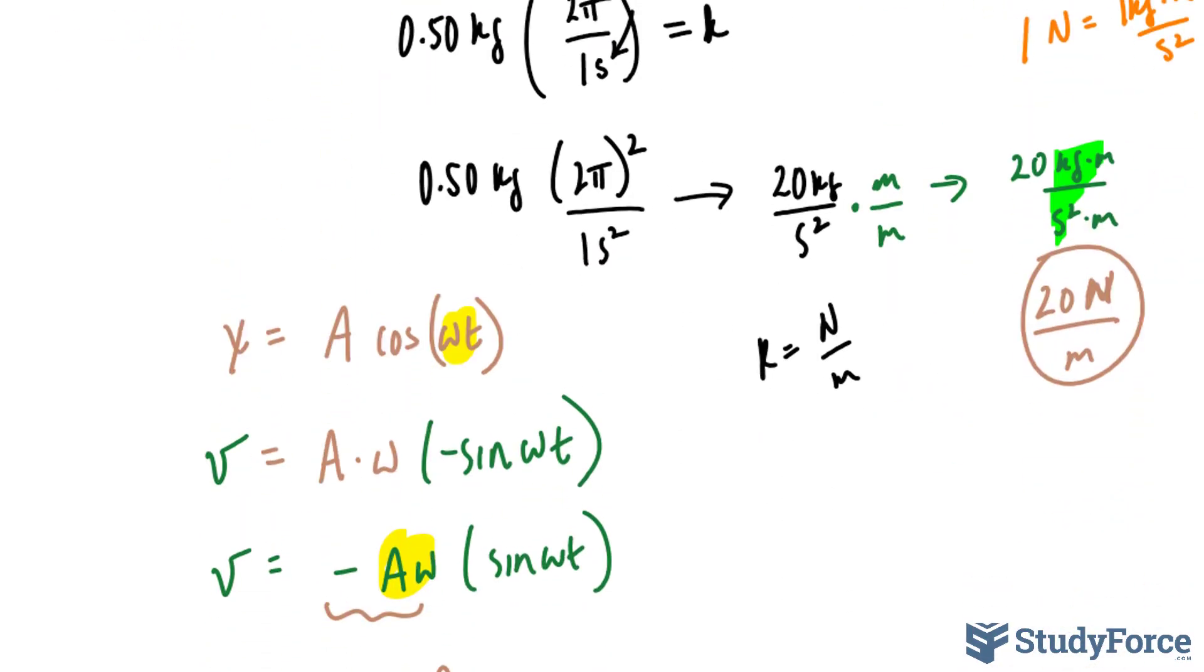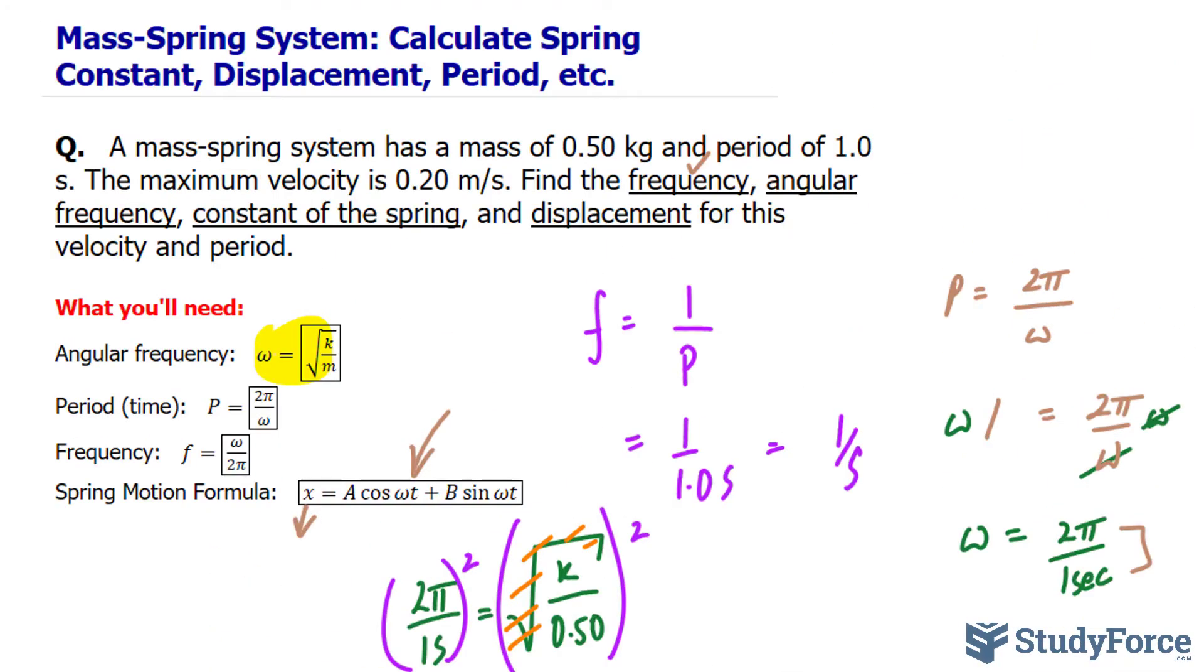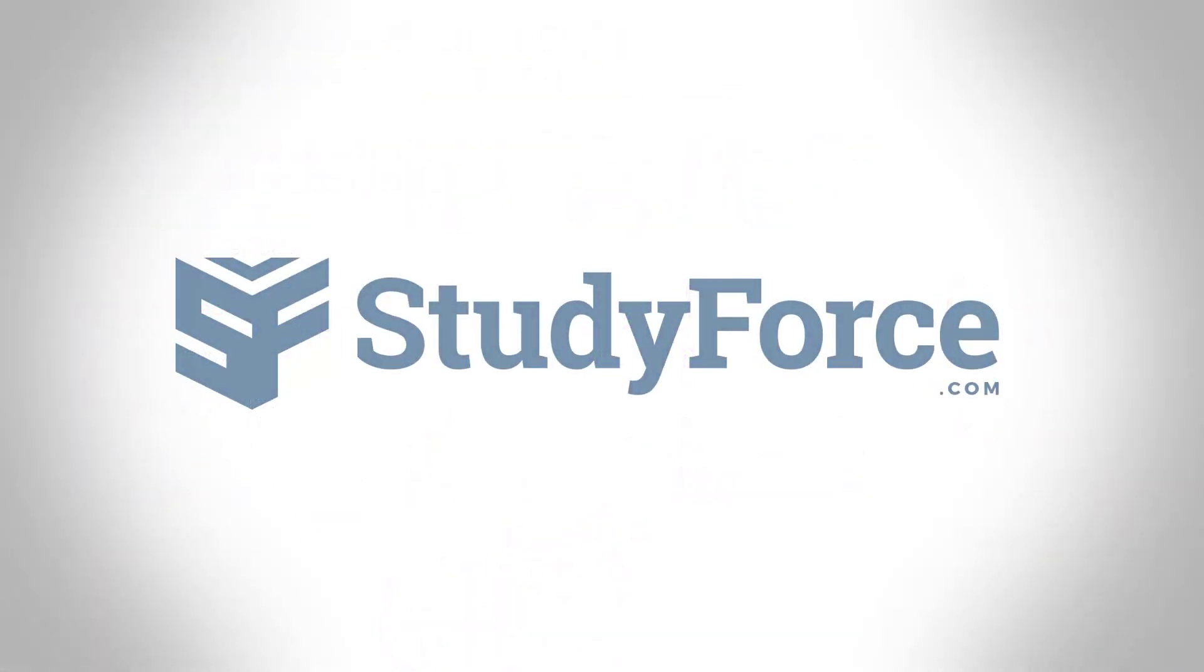This value can be placed into here for that interpretation. So there you have it. That is how to calculate the spring constant, displacement, and period in this mass-spring system.